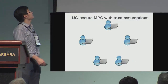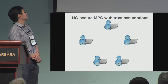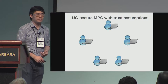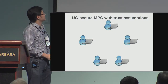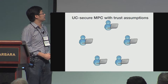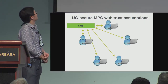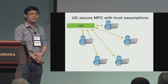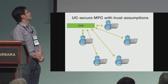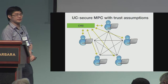So we consider an MPC with a trust assumption. Here we have some trusted party to generate some setup for the parties to use for the MPC. For example, we can have a common reference string which all the parties have access to, and then they can use that to compute the messages for the MPC protocol.